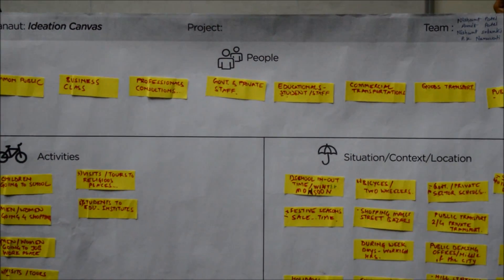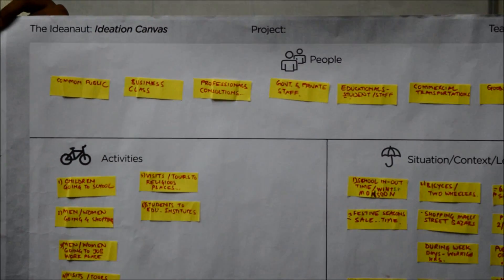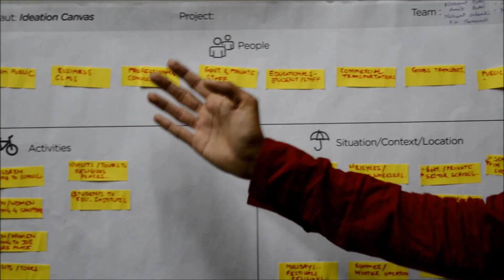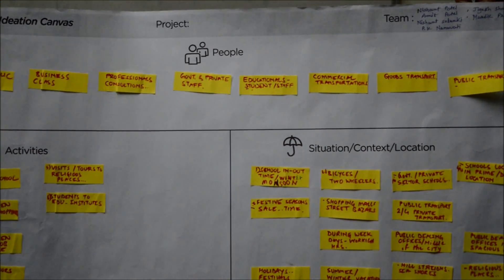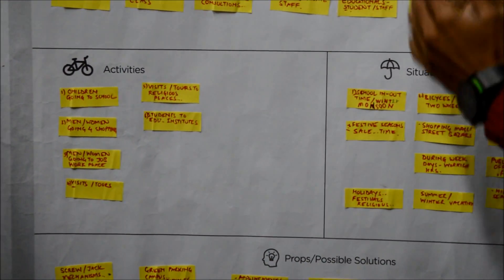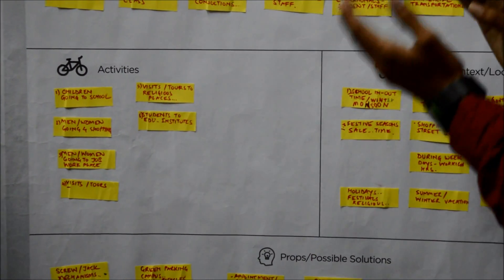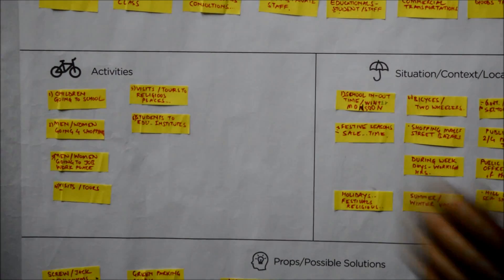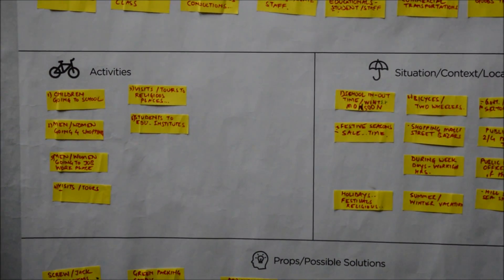In people, since our problem is the parking problem, we write the common public and business class who are affected by our problem. In activities, we write activities related to those people — for example, children going to school, or visiting tours and different places.